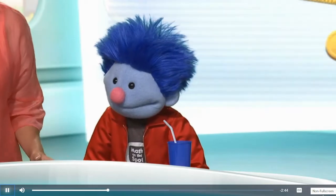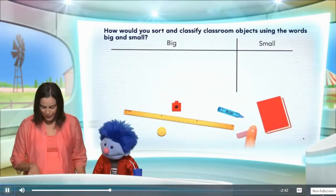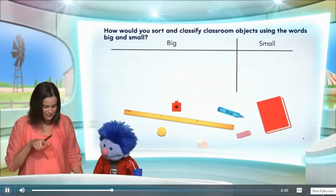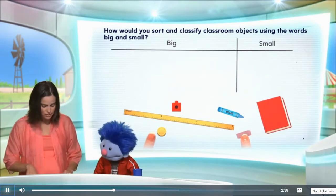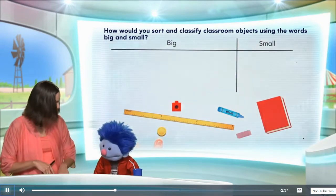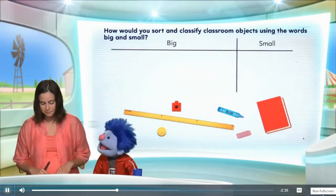Alright, let's see here. Here we have a book, a crayon, a connecting cube, a yardstick, an eraser, and a counter. That's a lot of stuff!